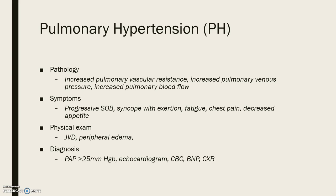Pulmonary pressures can be approximated via echocardiogram, which is considered a screening tool for those at high risk. High-risk groups include a first-degree relative with pulmonary hypertension, exposures to toxins, CHF, and cirrhosis.